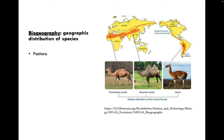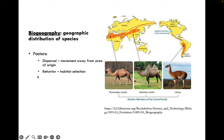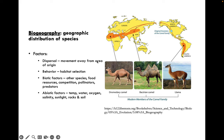Biogeography is the geographic distribution of species. Important factors include dispersal, or movement away from an area of origin — like possums moving further north as the climate warms. Behavior and habitat selection also determine where we find organisms. For example, camels are desert species, so you wouldn't expect to find them in the Amazon rainforest. Biotic factors such as competitor species, food resources, pollinators, and predators are also important biogeographical considerations, along with abiotic factors like temperature, water, oxygen, salinity, rocks, and soil.